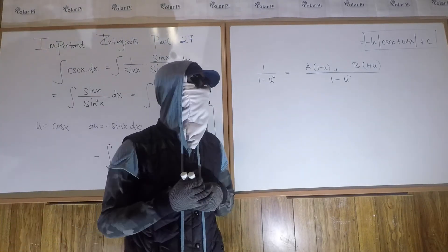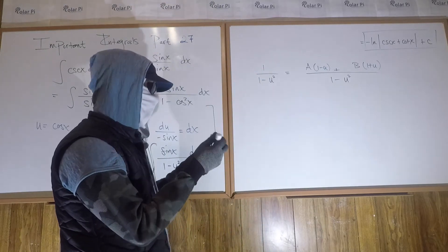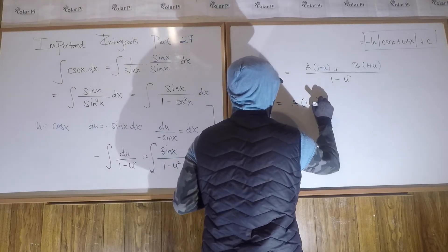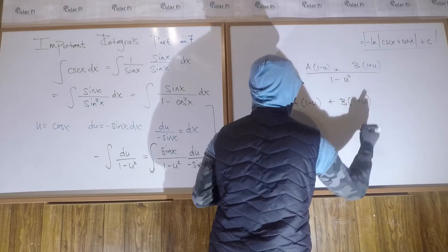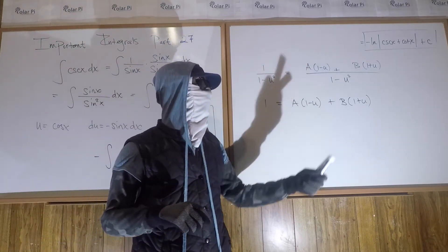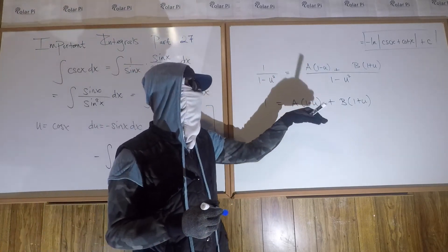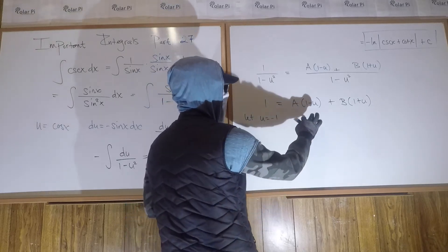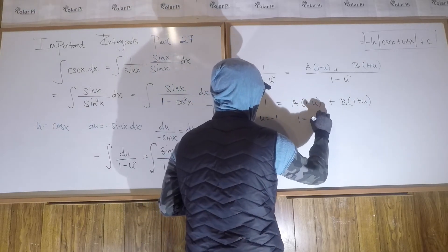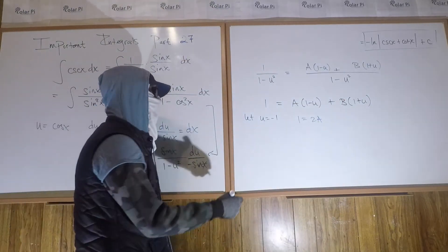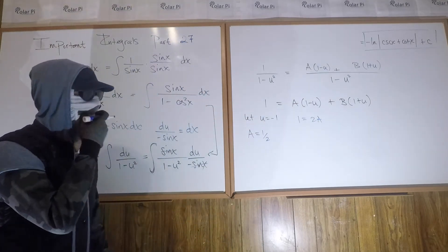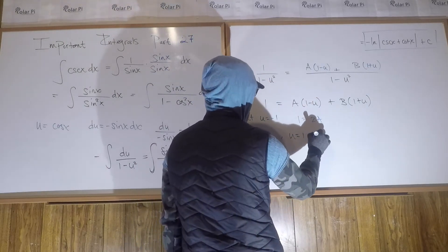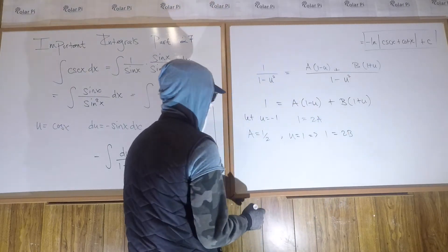This equation has to hold true for all u, and as the denominators are the same, we just have to ensure the numerators are the same — namely, 1 equals A times (1 minus u) plus B times (1 plus u). If we pick our u's strategically, we can solve for A and B efficiently. If we let u equal negative 1, this term is annihilated and we get 1 equals 2A, so A equals 1 half. The other good choice is u equals 1, which annihilates the A term, and we get 1 equals 2B, so B equals 1 half.